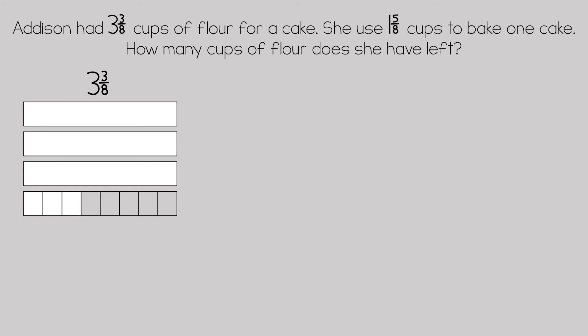We can take away one of the wholes, but looking at the bar model, we only have three-eighths to take away. So we are going to have to regroup our fractions to make one of the wholes into eight-eighths so that we can take away one, two, three, four, five-eighths.